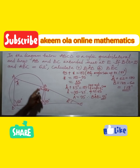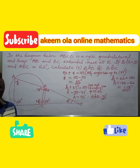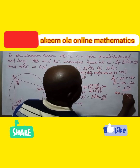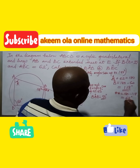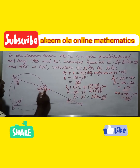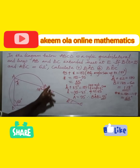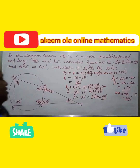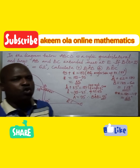To find angle BCE, we use adjacent angles on a straight line: angle BCE equals 180° minus 118°, which gives us 62°. So this angle is 62°. We can now consider triangle BEC — BEC is a triangle, and the sum of angles in a triangle is always equal to 180°.